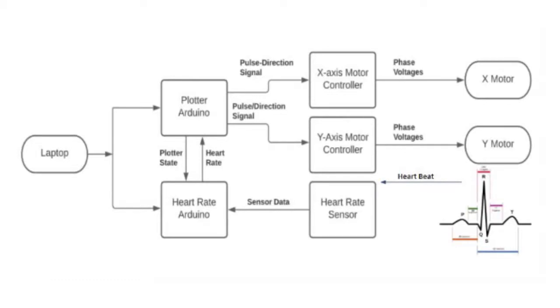The heart rate sensor, or the heart rate Arduino, is using an analog to digital conversion, which is sampling the heart rate sensor value, which is coming from a live patient. And the plotter Arduino is reading in these signals.